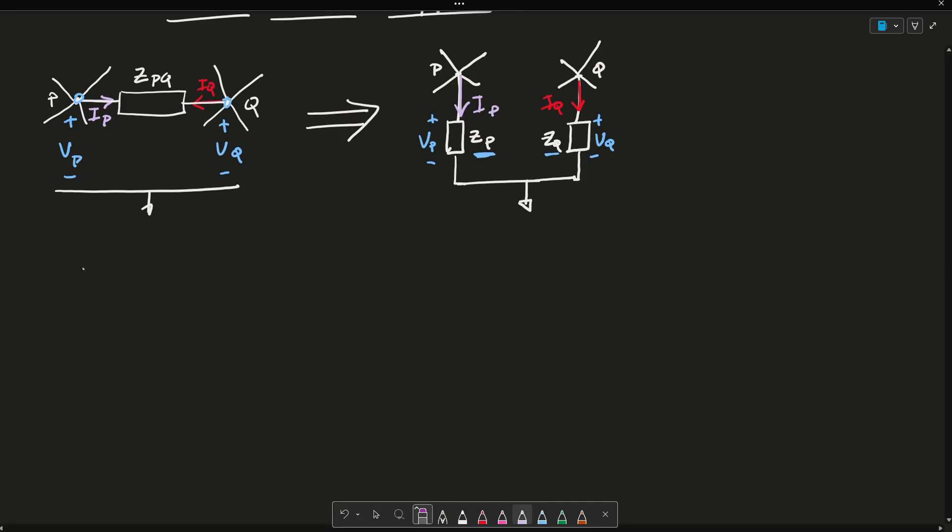In circuit A, I have this current IPA, which equals VP minus VQ over ZPQ, and that's just basically Ohm's law. I is equal to V over R, or V over in this case impedance Z.